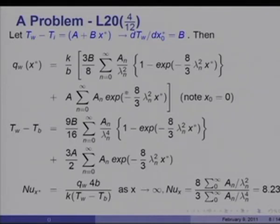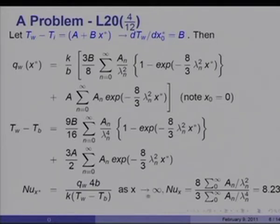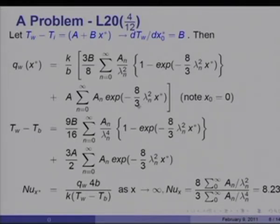Once q_wall is obtained in this manner, T_wall minus T_bulk is given by (9b/16) minus the sum from n=0 to infinity of a_n/λ_n⁴, plus terms from the step jump. The T_bulk minus T_i is an integral of q_wall(x*), and combining gives the Nusselt number Nu_x equal to q_wall times (4b/k) divided by (T_wall minus T_bulk). Notice that as x tends to infinity, the exponential terms vanish, so T_wall minus T_bulk reduces to (9b/16) times the sum of a_n/λ_n⁴, and likewise q_wall simplifies to the sum of a_n/λ_n².